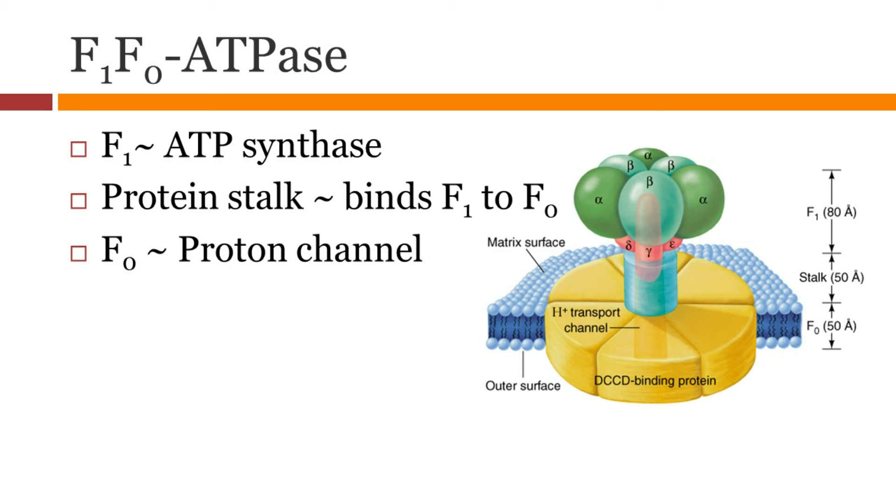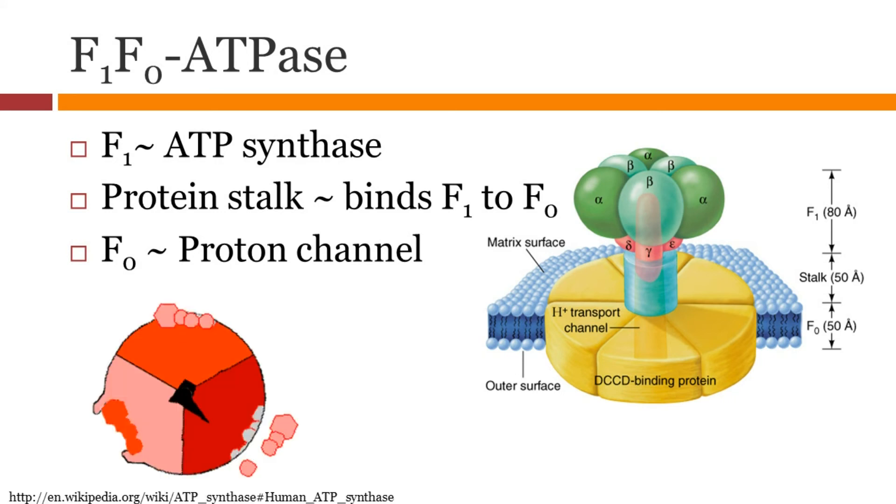Here is the animation from Wikipedia which shows the gamma subunit turning in the center. The incoming substrate which is pink in color is ADP and inorganic phosphate whereas the product in red is ATP.